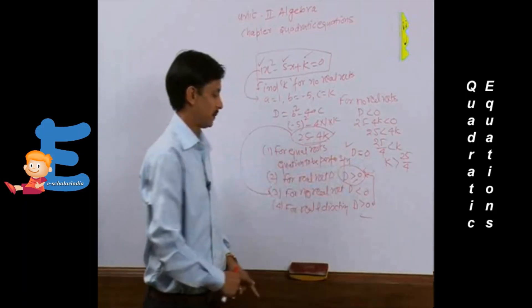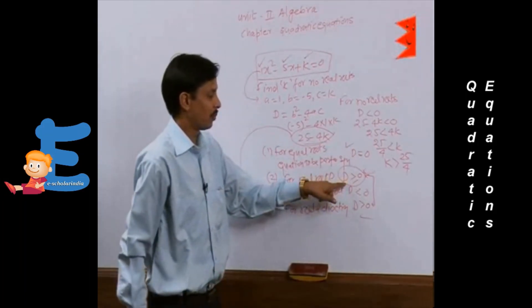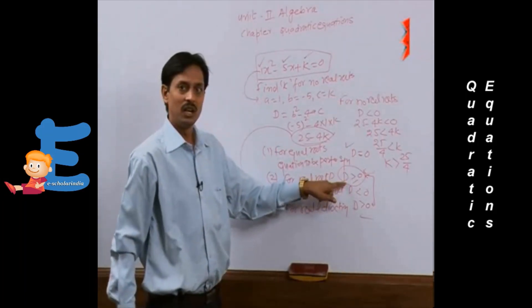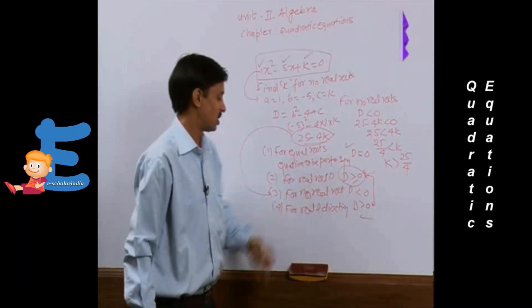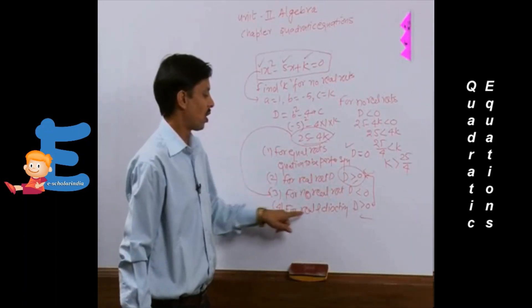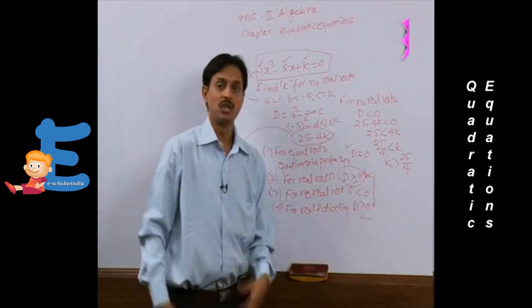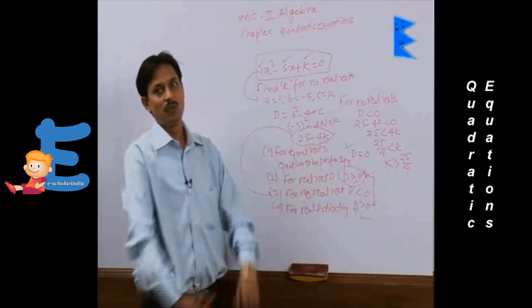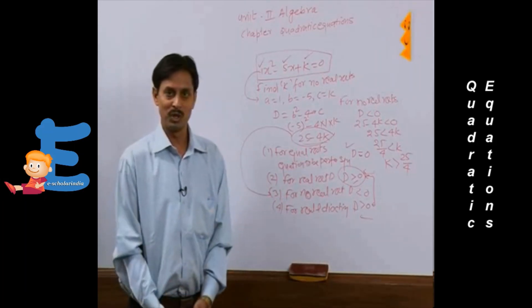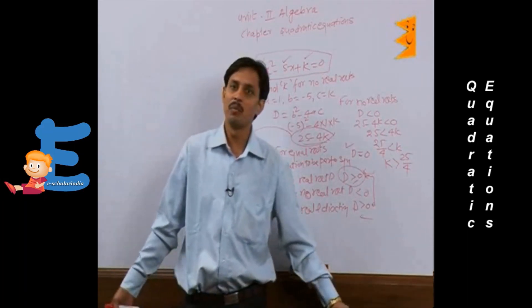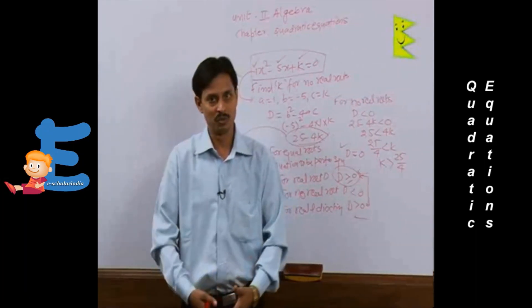Whenever it is written that the equation is a perfect square, its meaning is equal roots. Whenever asking for real roots, take D ≥ 0 (both signs). When for no real roots, D < 0. For real and distinct (unequal) roots, D > 0, as shown in our example. Finally, an unlimited number of word problems remain, which we will also discuss.